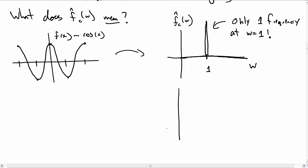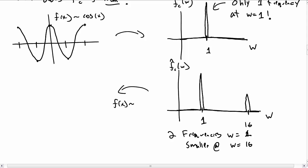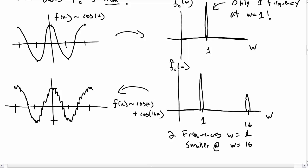The Fourier transform is telling you there's only one frequency in your original function, and this frequency is at ω equal to 1. Let's go the other way. What if for my Fourier transform, I have a spike not only at 1, but also at ω equal to 16? A large spike at ω equal to 1 and a smaller spike at ω equal to 16. This tells me I now have two frequencies in my function. So f(x) goes something like cos(x) plus cos(16x) with a smaller amplitude on the cos(16x). It should look like cos(x) with wiggles on top.